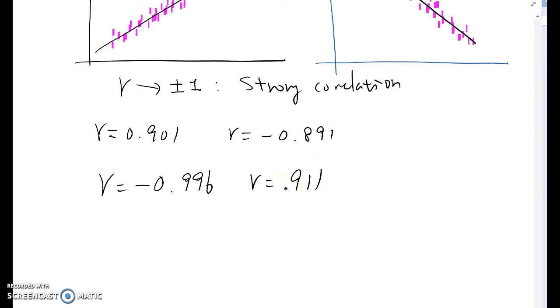Then how about this case? The first one is negative 0.996, the second one is 0.911. Which one shows stronger correlation? Must be this one because it is very close to absolute value one. So as I told you, if r is approaching either plus or minus one, we are considering strong correlation.